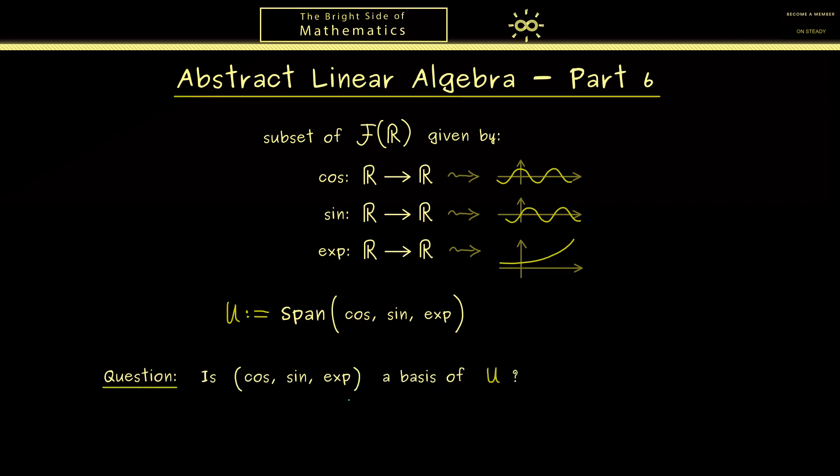And now you might remember, in order to show that this is a basis, we have to show two properties: we have to check if the family is generating and if the family is linearly independent. In fact, generating is no problem at all, it's simply given by the definition, since U is defined by the span of this set.